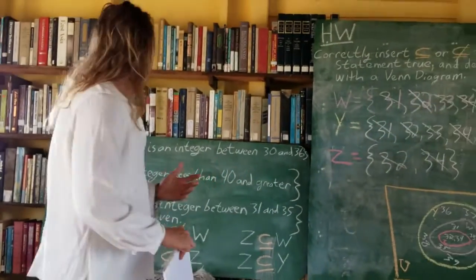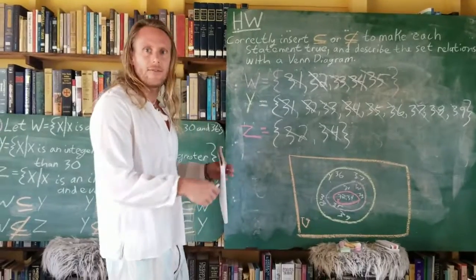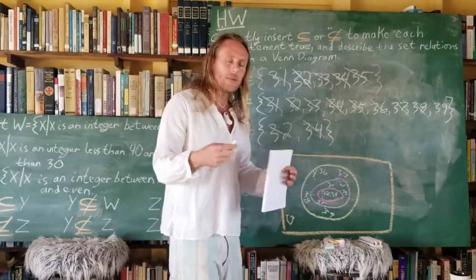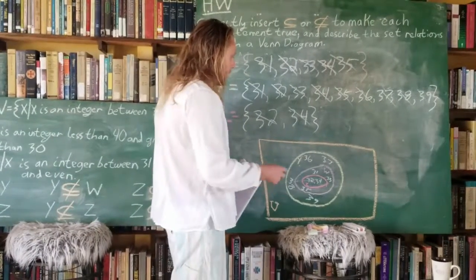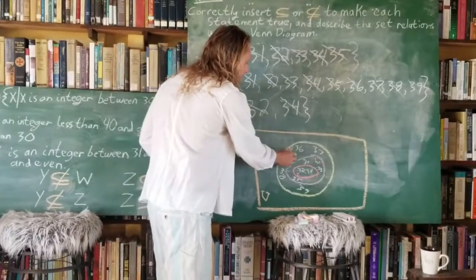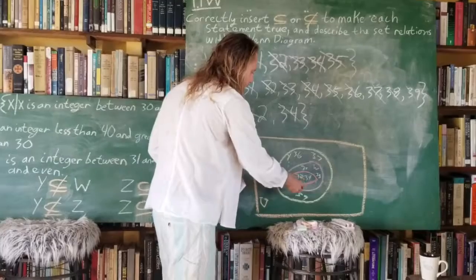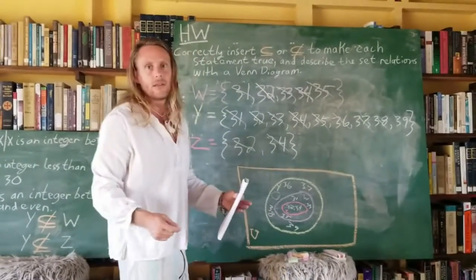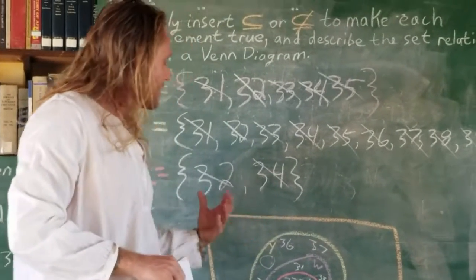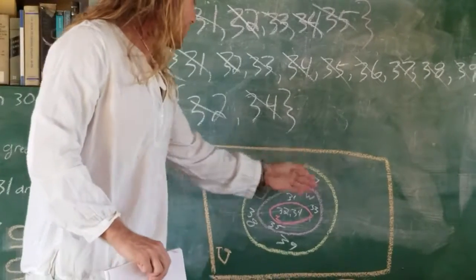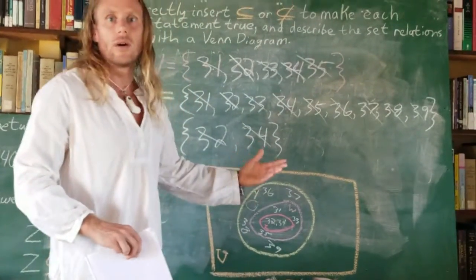Leading into problem 3, which involves the empty set — where would we put an empty set in a Venn diagram? The empty set is a subset of all sets, so taking set Y as an example, the empty set is a subset of Y. On the diagram, this would be all the space in Y where we don't have a number — it's a subset of Y but containing no elements. It's a picture representation of what the empty set would look like.